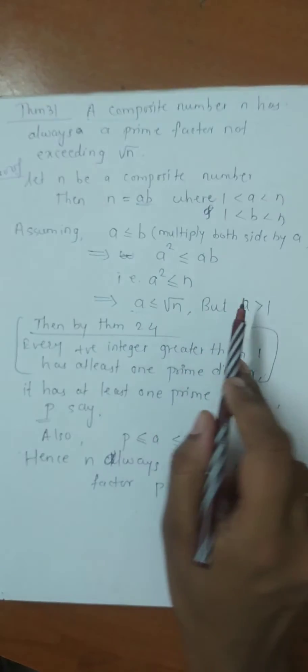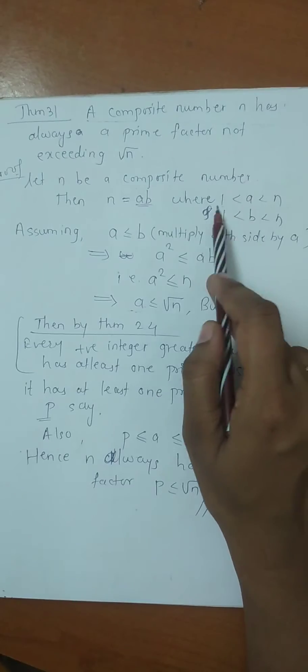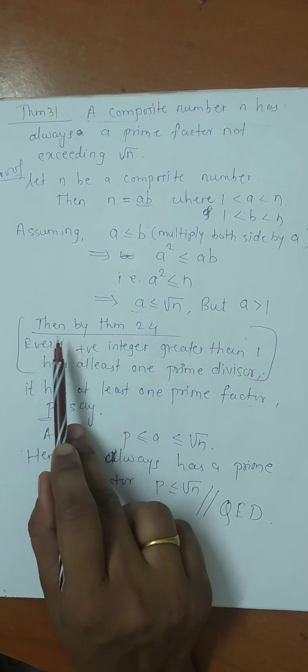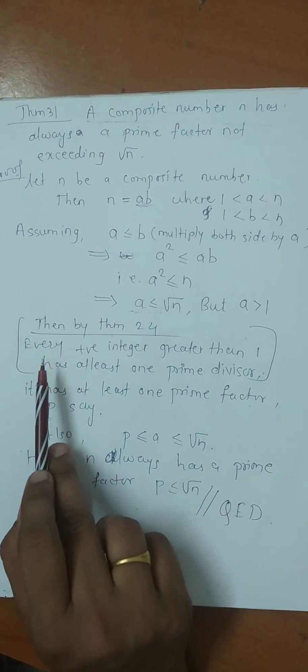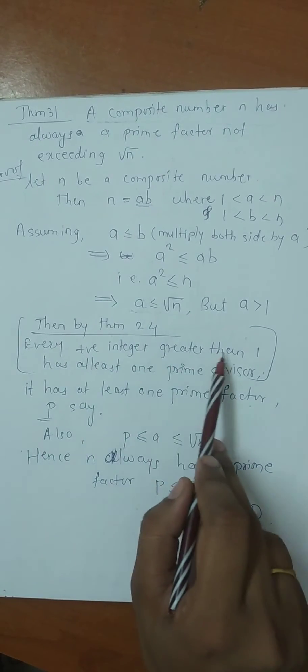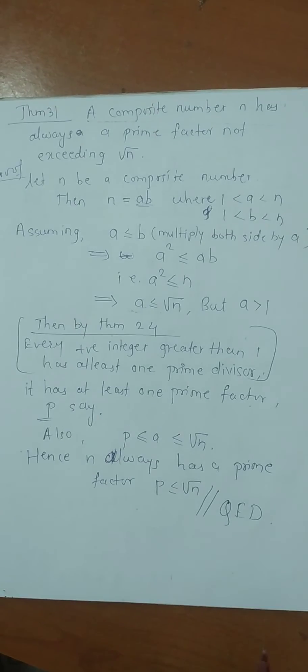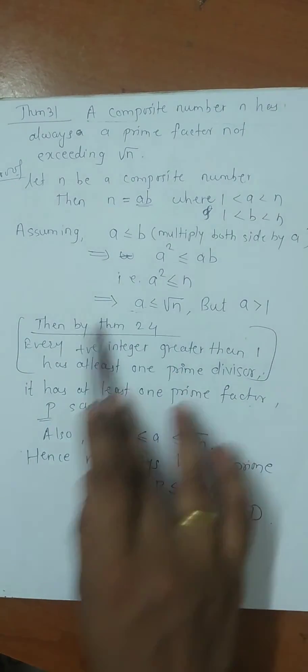Yes. But we assume that what? a is greater than 1. See here, a is greater than 1. Yes. So theorem number 24. Read theorem number 24 of this book. You will get every positive integer greater than 1 has at least one prime divisor. Yes. So suppose p is a prime divisor of this integer.